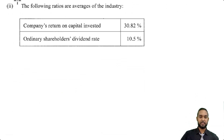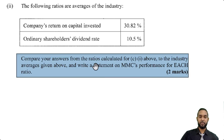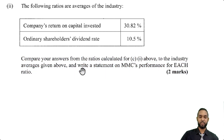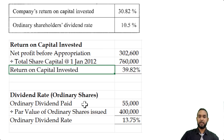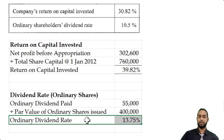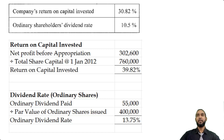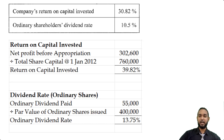There's one more part to this. The industry averages are: return on capital invested 30.82%, and ordinary shareholders' dividend rate 10.5%. We need to compare MMC's ratios to these industry averages and write a statement on MMC's performance for each ratio. MMC's return on capital invested was 39.82% versus the industry average of 30.82%, and the dividend rate was 13.75% versus the industry average of 10.5%. Both ratios for MMC were higher than the industry average, meaning the company is doing better than the other companies in the industry. If you have a better articulation of that, please feel free to leave it in the comment section below.